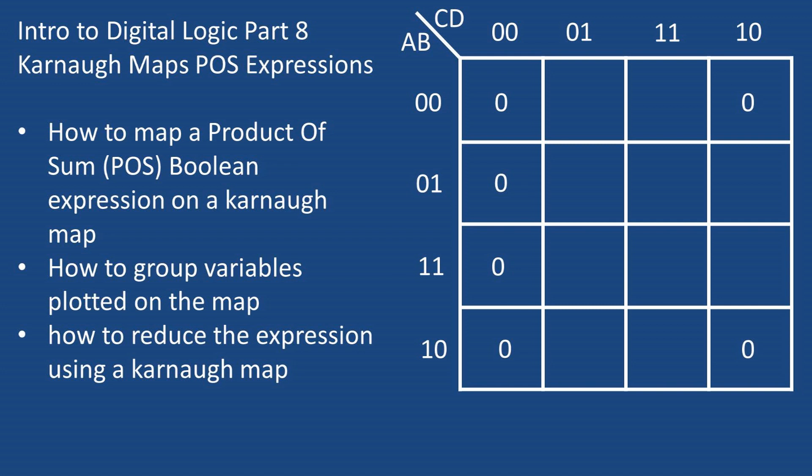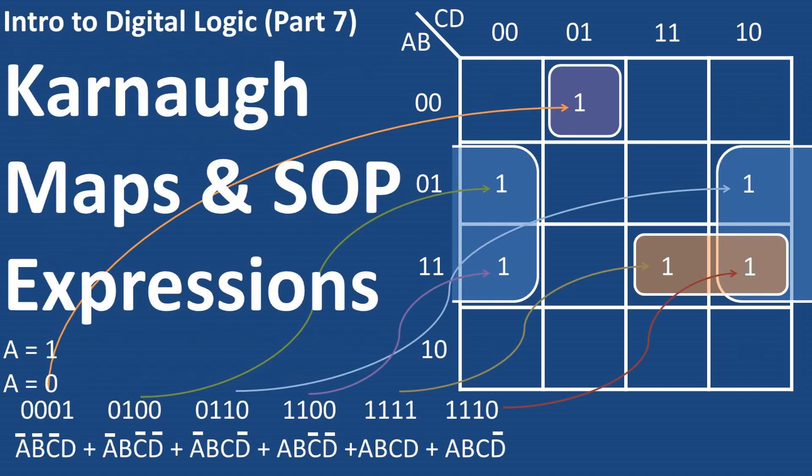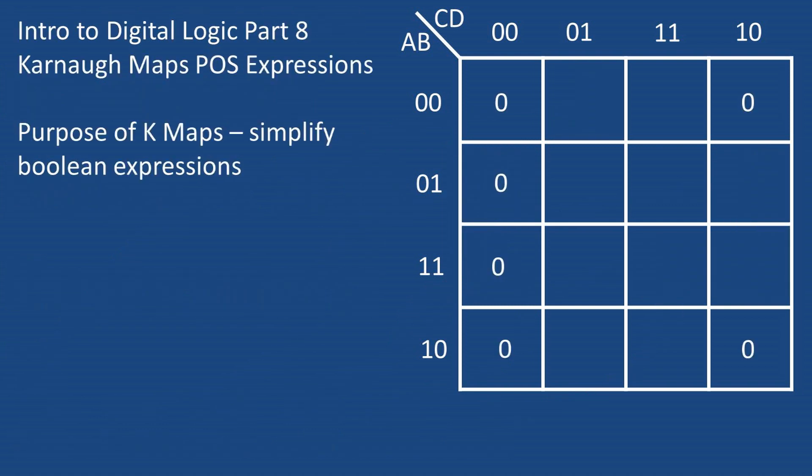How to group variables plotted on the map and how to reduce a POS expression using a Karnaugh map. Note I did another video on sum of product Karnaugh maps and some of the material is repeated in this video.